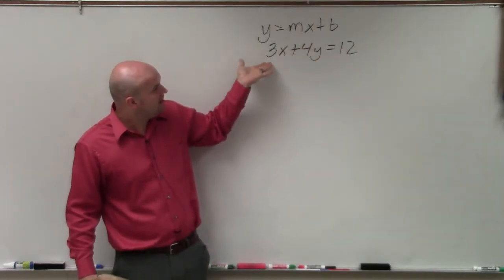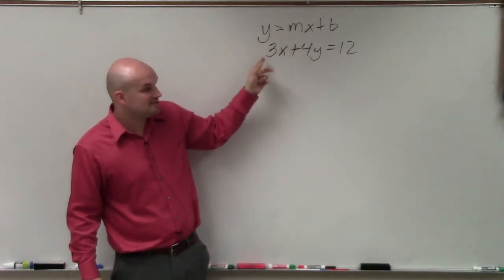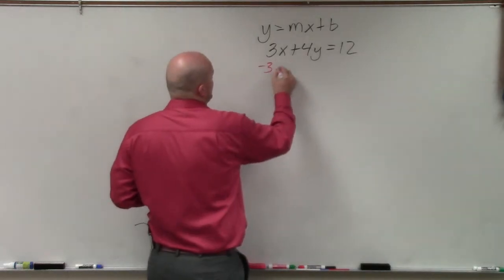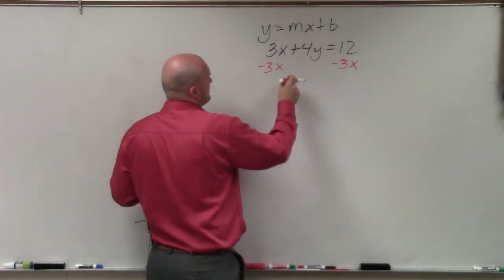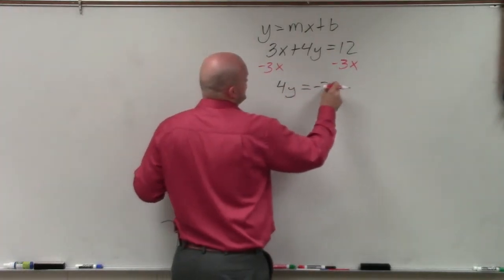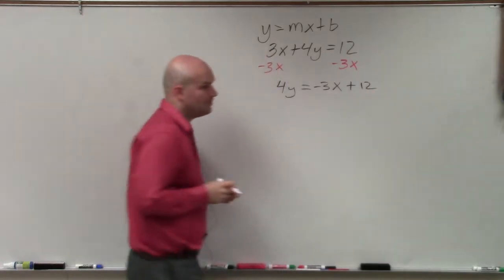So we see in this equation, my y is being multiplied by 4, and it's being added by 3x. So the first thing you do is subtract the 3x. And therefore, we'll have 4y equals negative 3x plus 12.